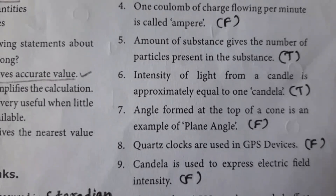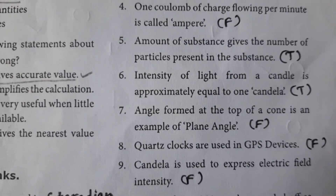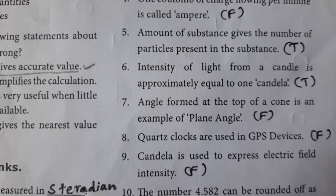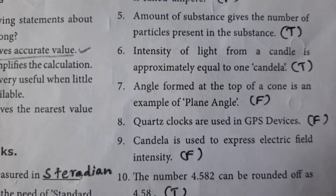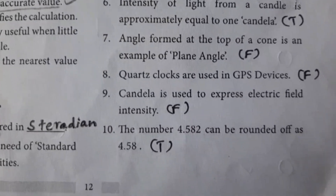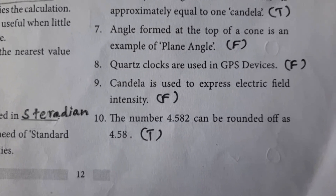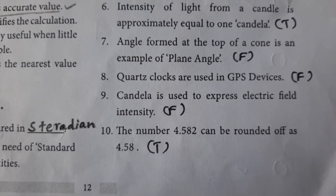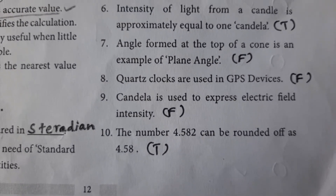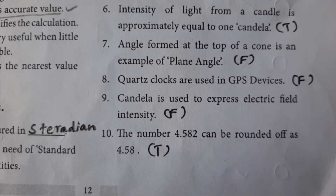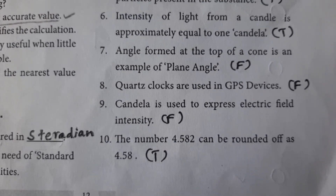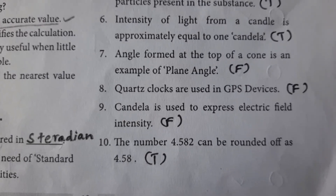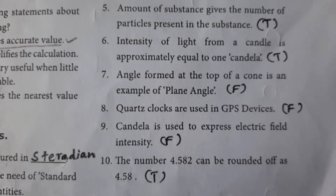Quartz clocks are used in GPS devices — False; atomic clocks are used in GPS devices. Candela is used to express electric field intensity — False; candela measures luminous intensity. The number 4.582 can be rounded off as 4.58 — True.